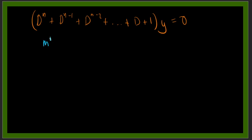We will have m^n + m^(n-1) + m^(n-2) + ... + m + 1 equal to 0.